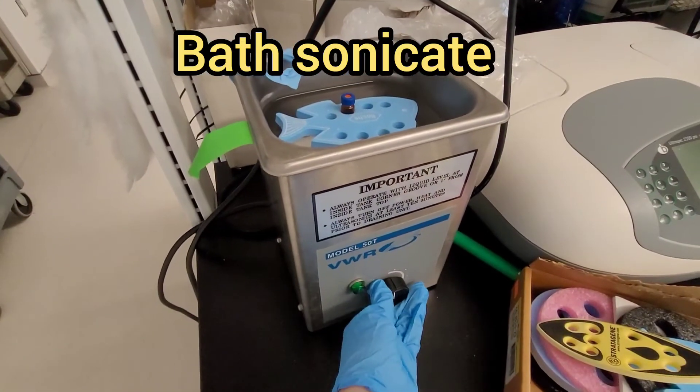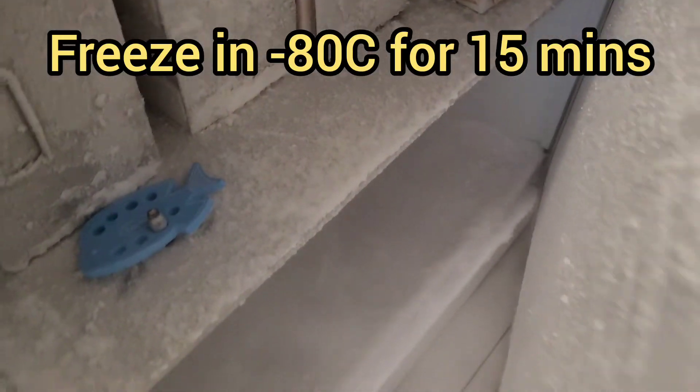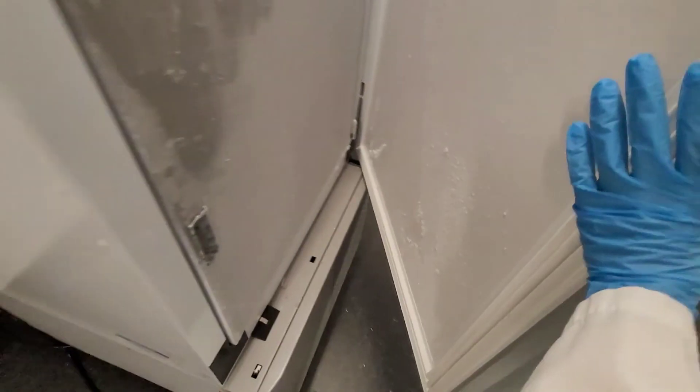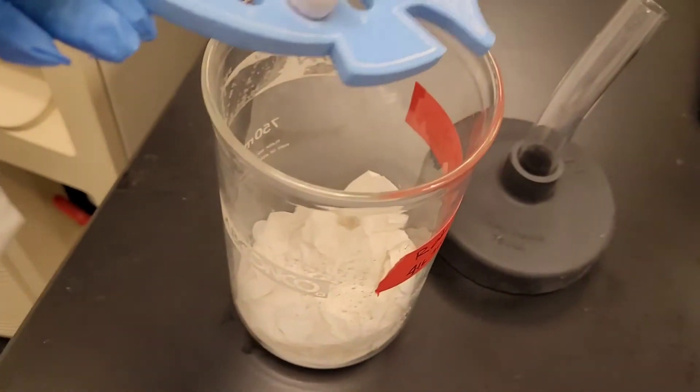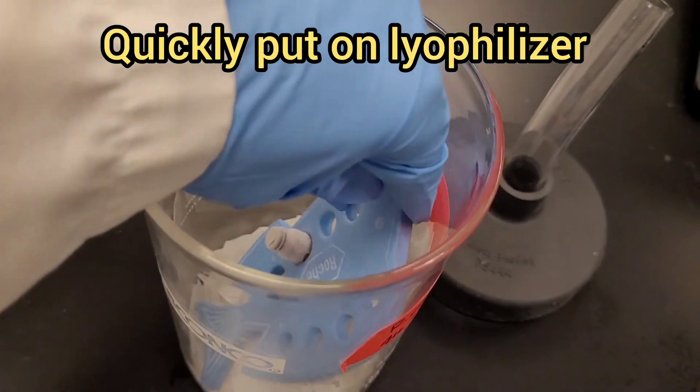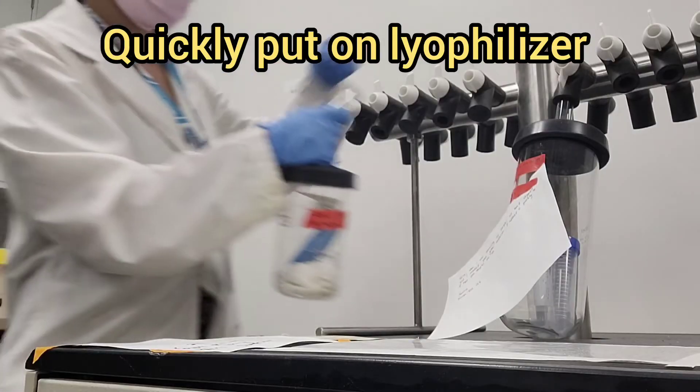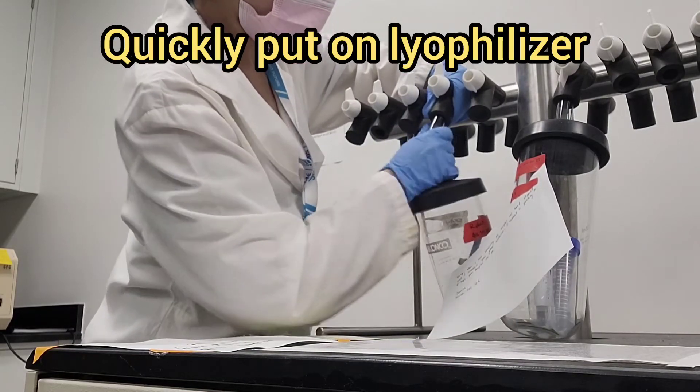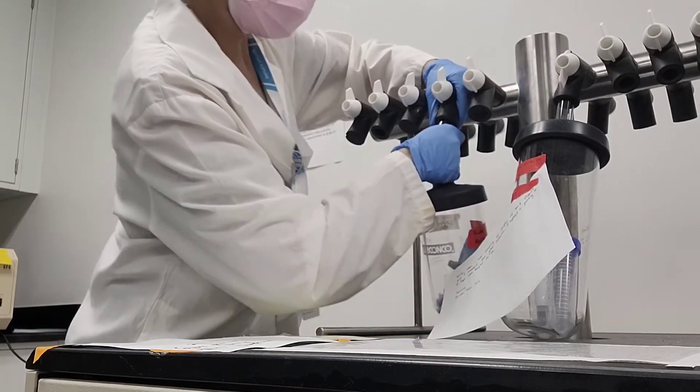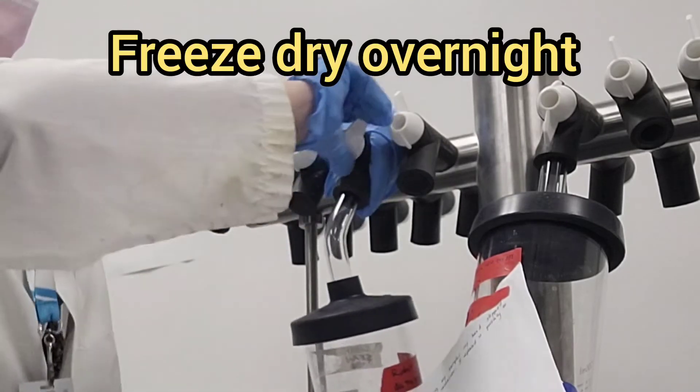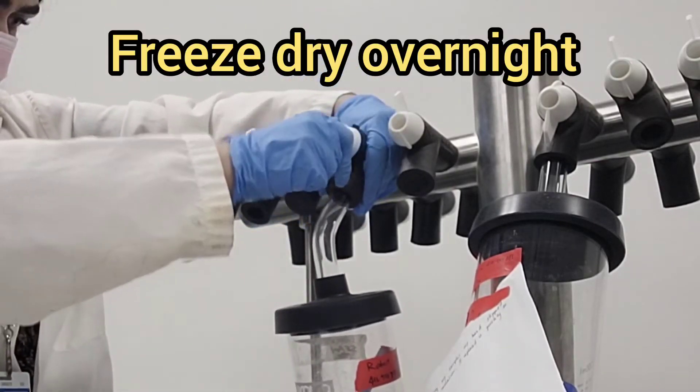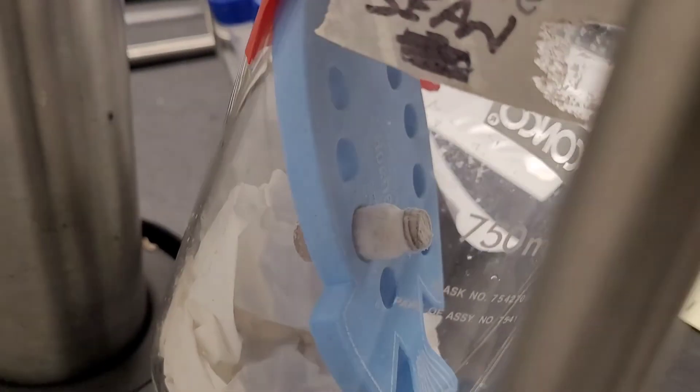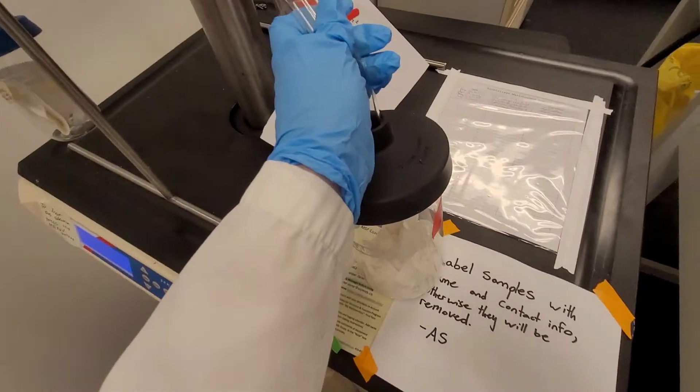Then you want to sonicate the solution after you pipette it so it is completely dissolved. Then freeze it in a minus 80 fridge for a while until it is completely frozen. Put it back on the lyophilizer and wait for another day. Make sure you put it on the lyophilizer quickly so that the solution doesn't have time to thaw. This is a freeze drying process, so it needs to be completely frozen before you put it on the lyophilizer.